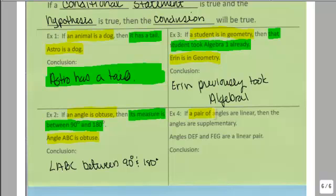And it says if a pair of angles are linear, then the angles are supplementary. Angles DEF and FEG are a linear pair.